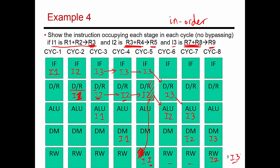Looking at the average CPI: if everything goes well, the best-case CPI is one. Every time something bad happens, it adds to the CPI. In this example, two stall cycles occurred across three instructions, giving an average CPI of 1.66. This is measured starting after the pipeline has warmed up, finishing instructions at a rate of 1.66 cycles per instruction completion.